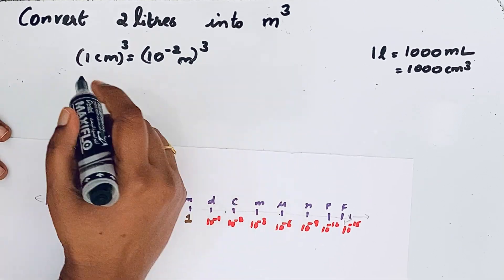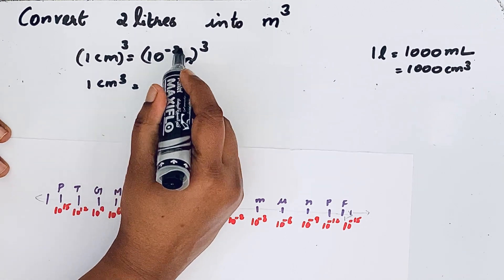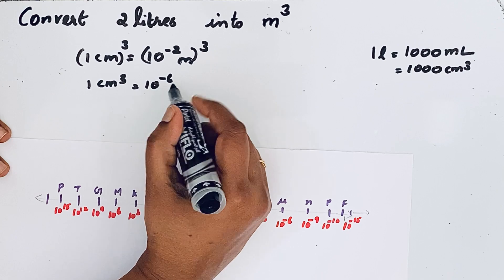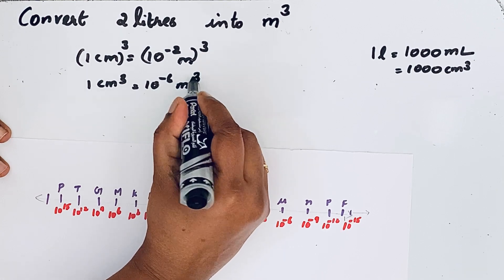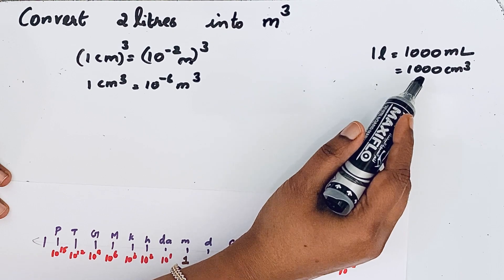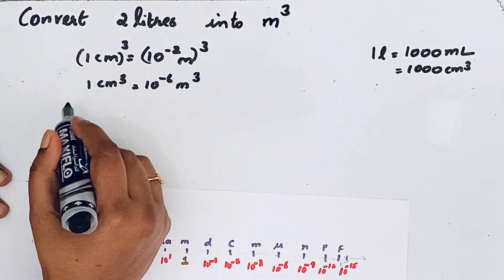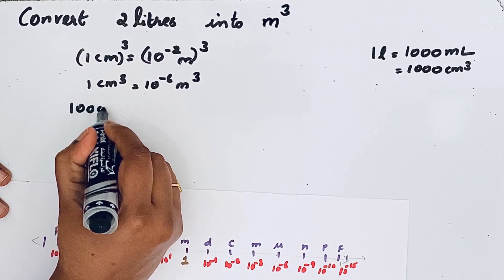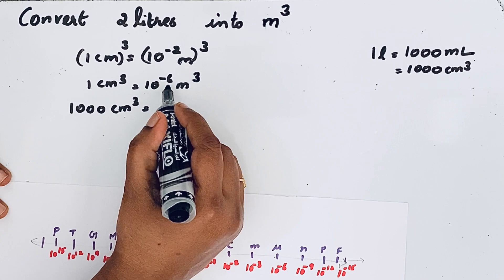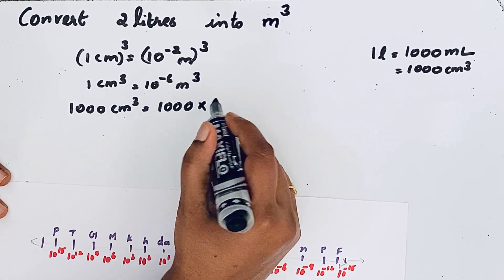So we can write: 1 centimeter cube = 10⁻⁶ meter cube. And since 1 liter = 1000 centimeter cube, we substitute: 1000 centimeter cube equals 1000 × 10⁻⁶ meter cube.